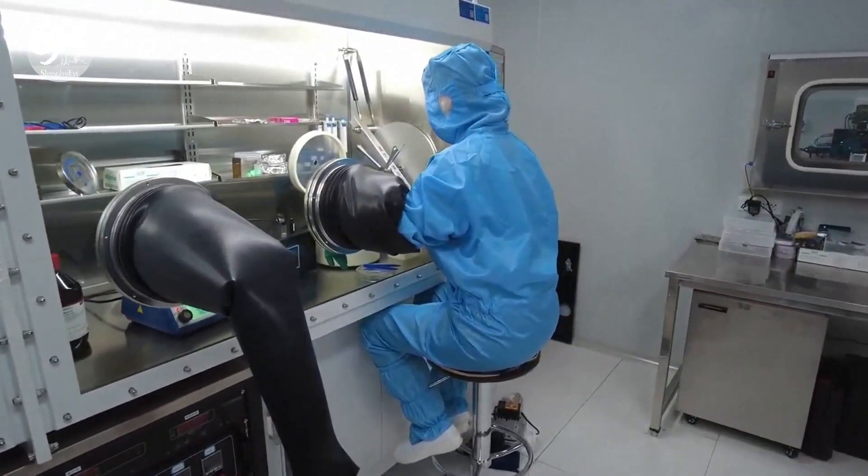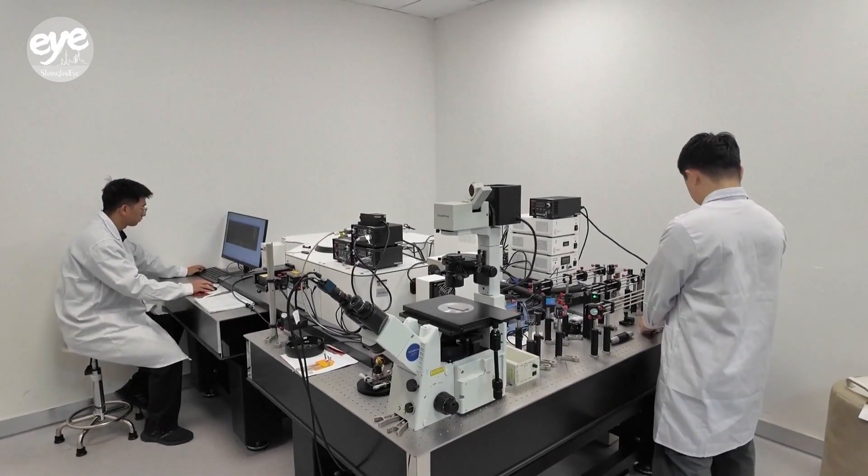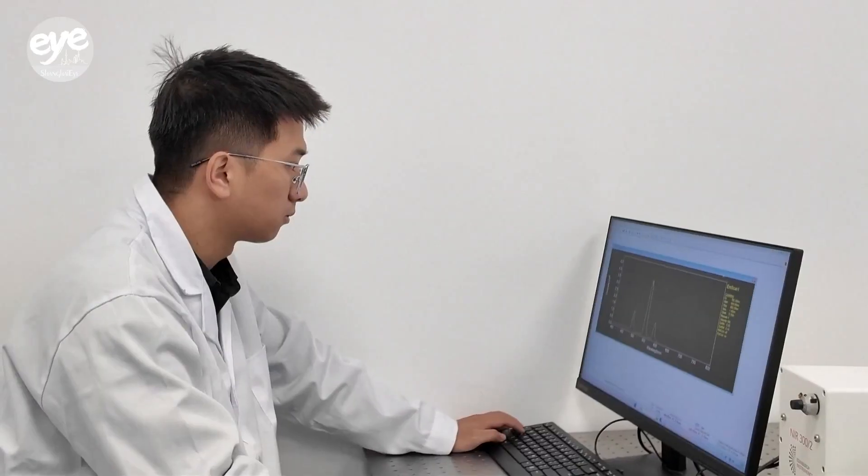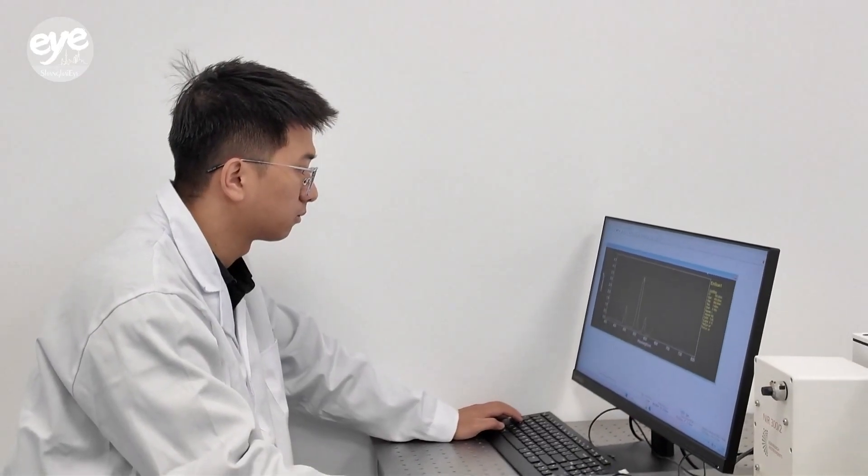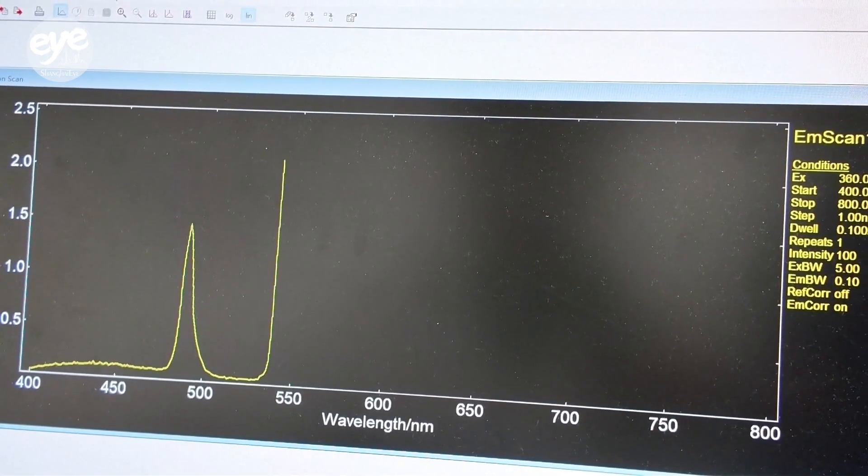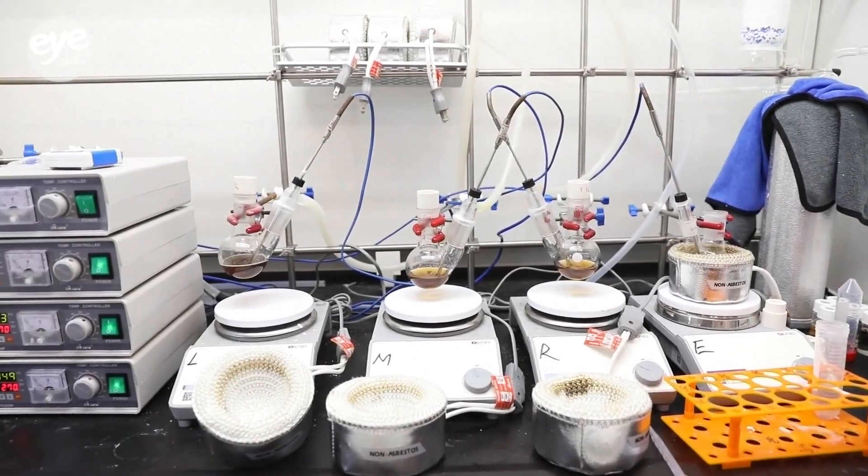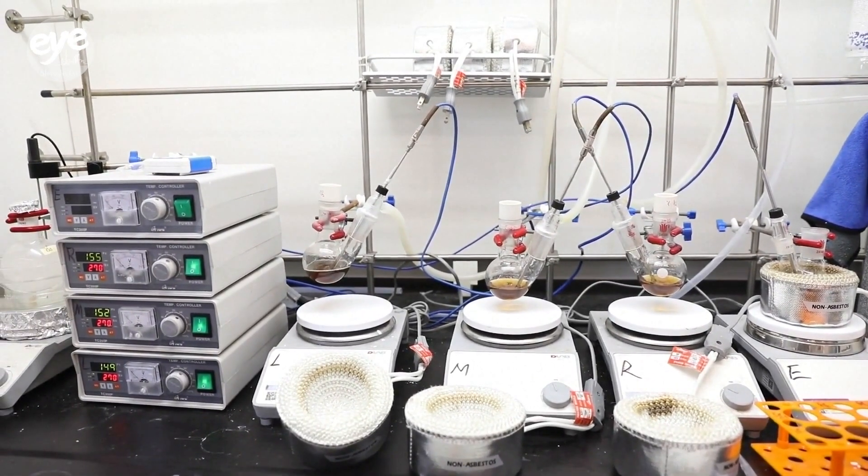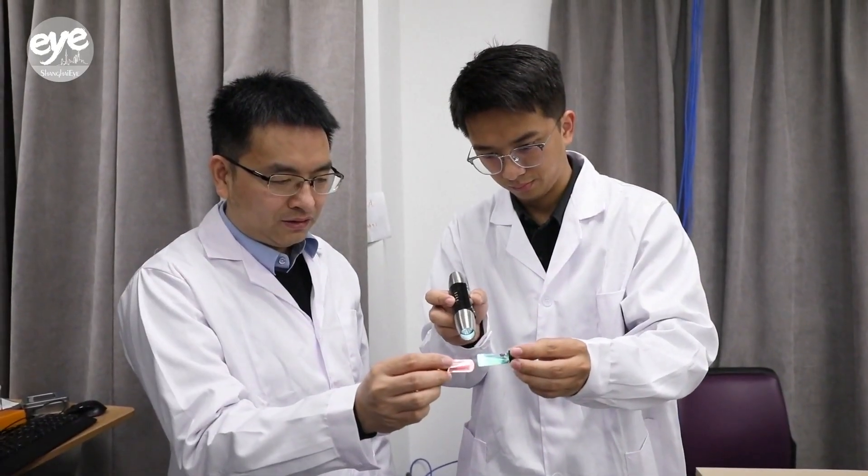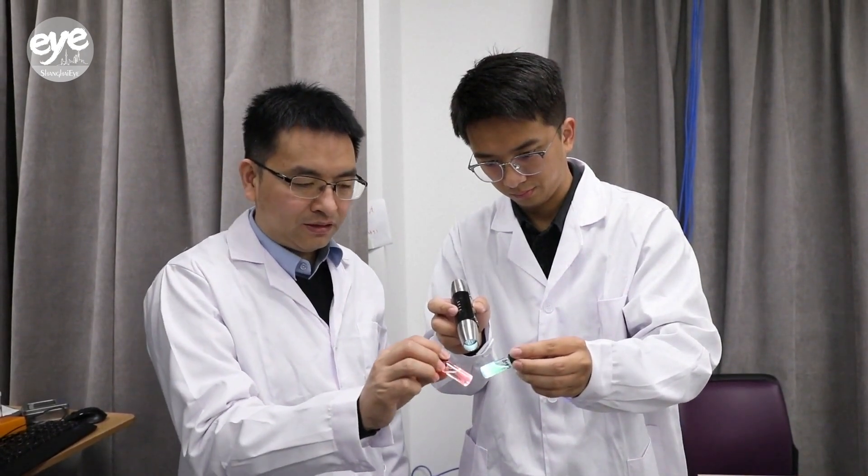In LEDs, an electric current stimulates a material like gallium nitrate, which emits light. Although rare earths are known for their bright and stable light, they're also insulated, meaning electricity won't pass through them. For that reason, rare earths are rarely used in LEDs.